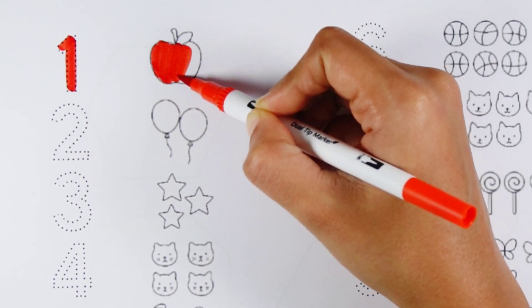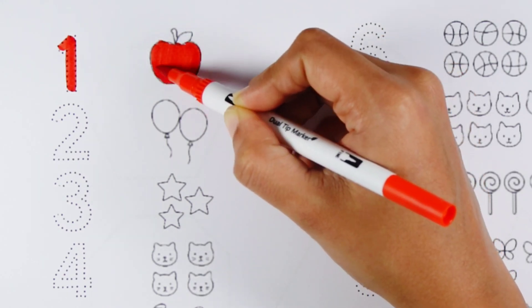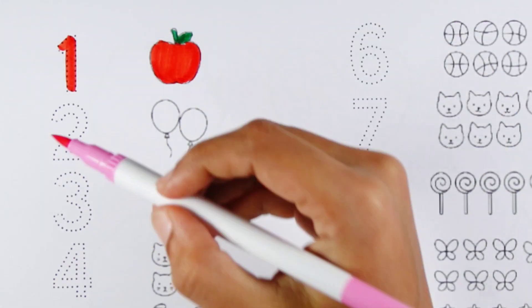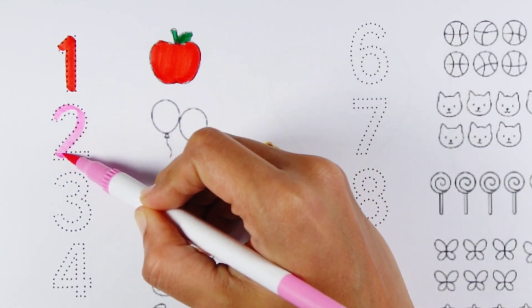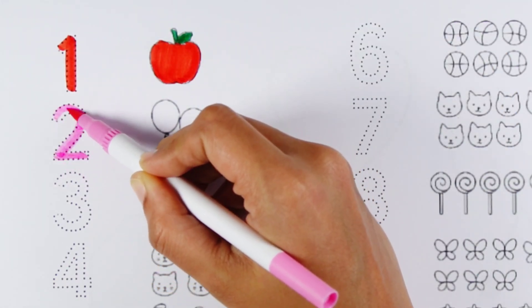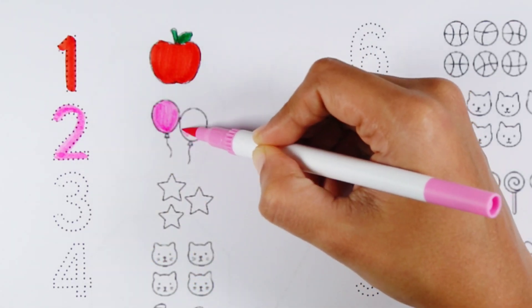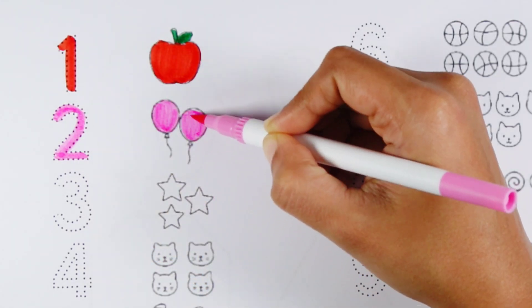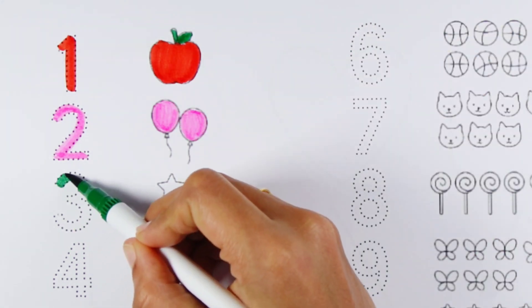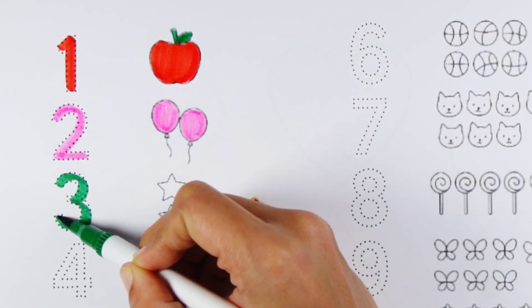One apple. Number two. Here comes number ten and angry mother hen. One, two, three, four, five, six, seven, eight, nine, ten. Number three.